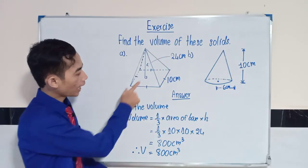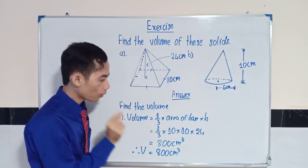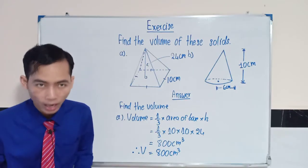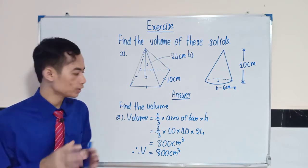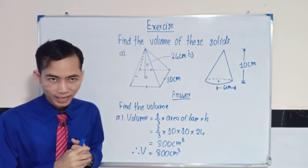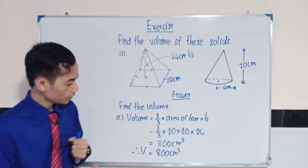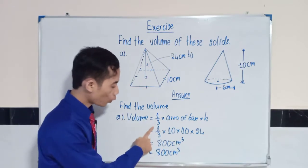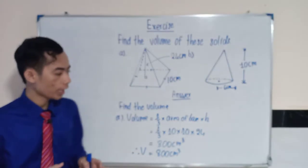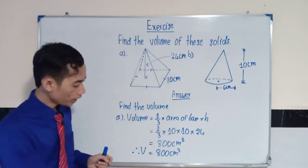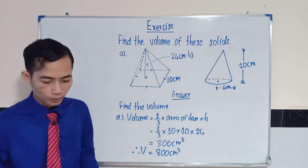Now we know that the base is square, so we can say area of base is equal to the area of square. And we know that area of square is equal to side times side, so we can say 10 times 10. Volume is equal to 1 over 3 times 10 times 10 times 24. Next we get 800 centimeter cube. Finish A.